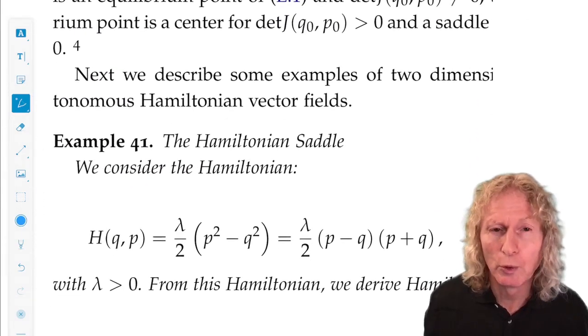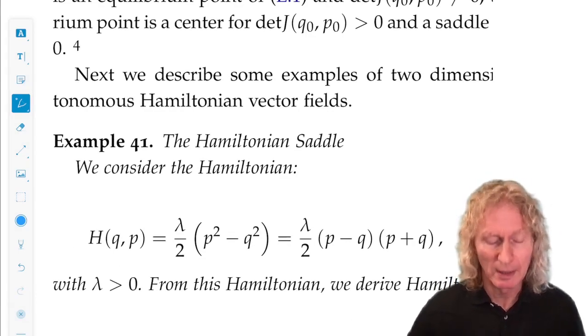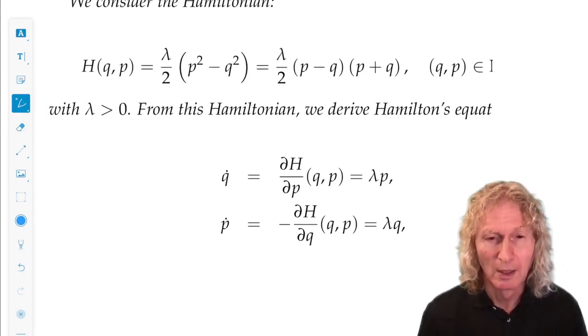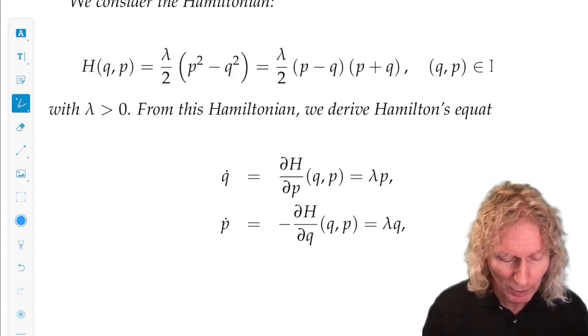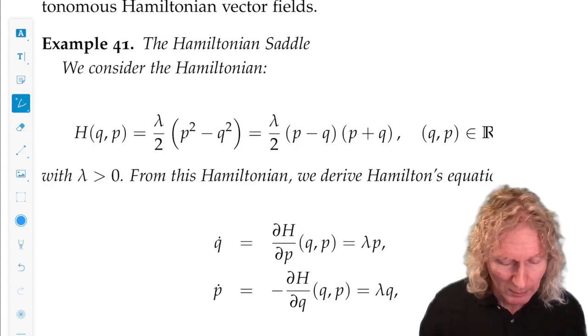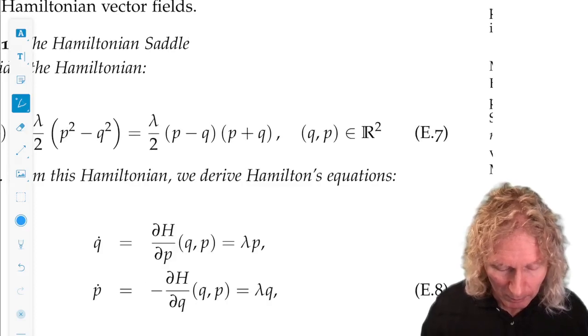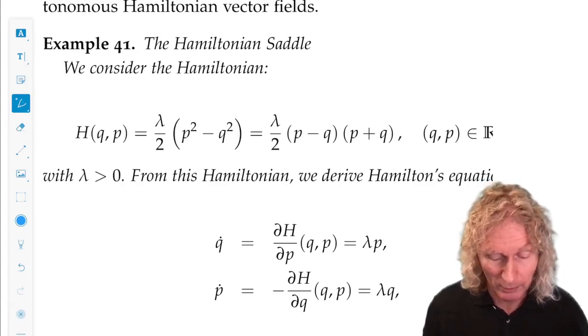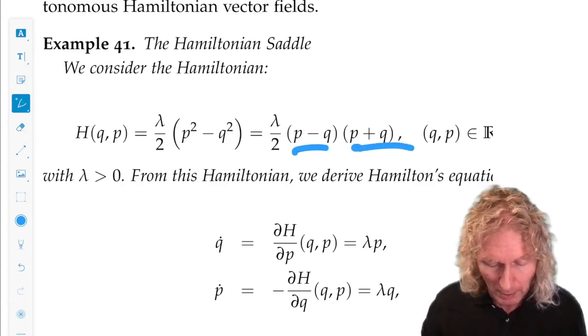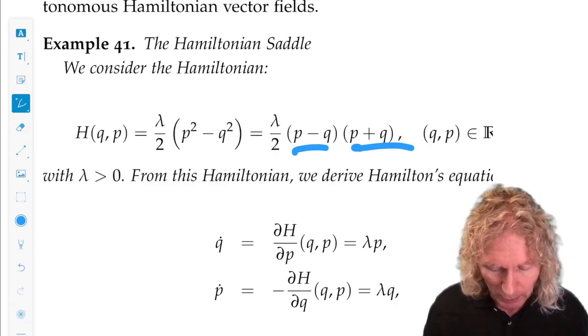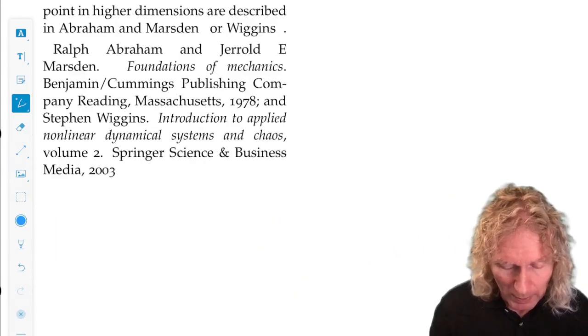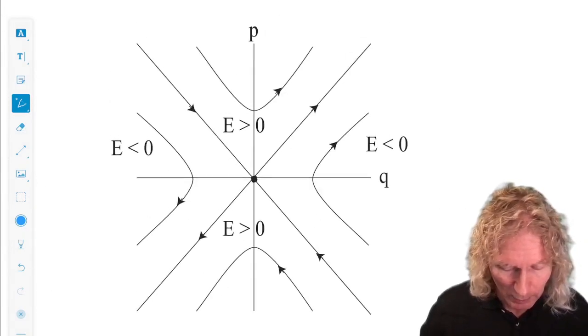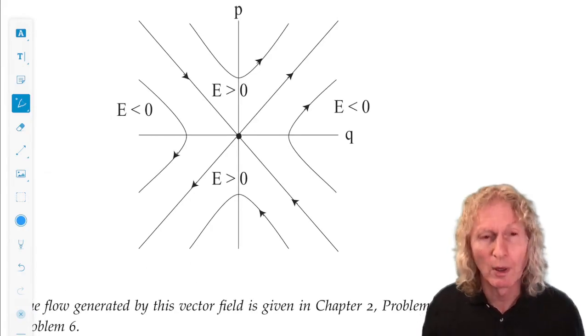There are two linear Hamiltonian systems on the plane that are interesting, and they come up, surprisingly, in many applications. This is called the Hamiltonian saddle. Lambda is a positive constant. So lambda over two, p squared minus q squared. We can factor that. Hamilton's equations are given by this, and we can plot the level curves of this function.